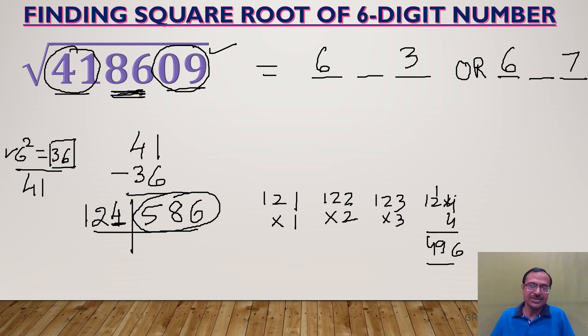So now you have two possibilities: 643 or 647. Now which one is the correct answer? Digit sum method is going to help us out here, or you can have the Vedic method of squaring numbers ending with 5. So I'll use that here.